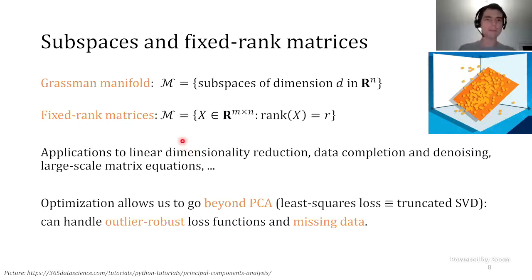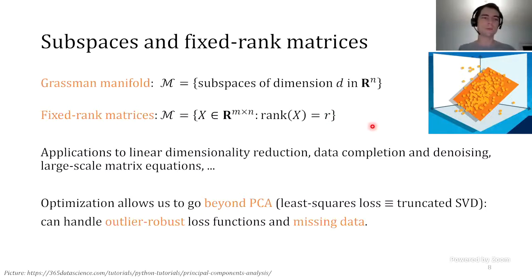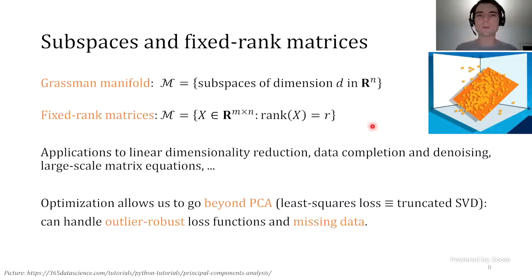The fourth example: if you are optimizing over matrices of size N by N, but you're only interested in the matrices whose rank is equal to R—and it's important I'm saying equal to R, not bounded by R—then that set is a smooth embedded submanifold of the set of matrices. There are some intricacies; it's a bit more complicated to handle than others. But certainly if you have encountered optimization problems with rank constraints, this could be a useful tool in that situation.